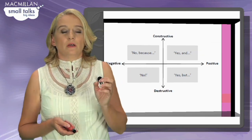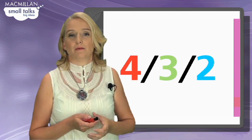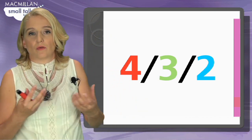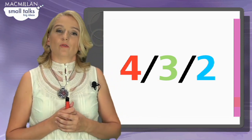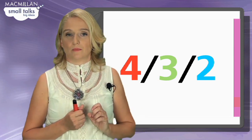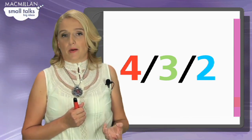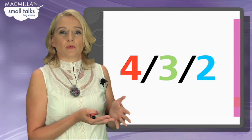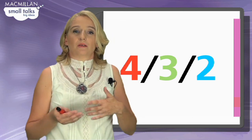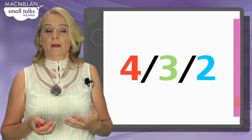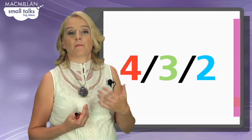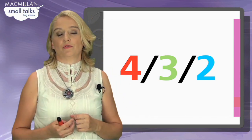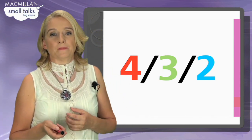Another idea is called 4-3-2. Students describe an incident, anecdote, or story: first to one partner in four minutes, then to another partner in three minutes, then to a third partner in two minutes. What happens is students begin to speak much faster and develop their fluency. The same can be transformed for writing — not in four, three, or two words, but perhaps in four paragraphs, then three, then two, so students have to compact the language and think quickly about how to produce ideas.